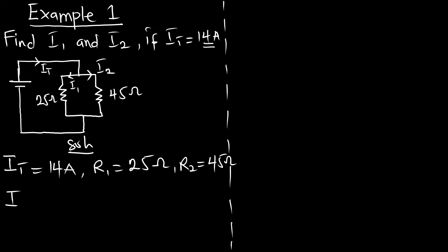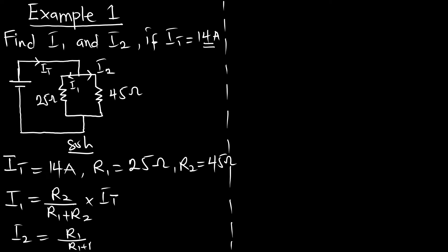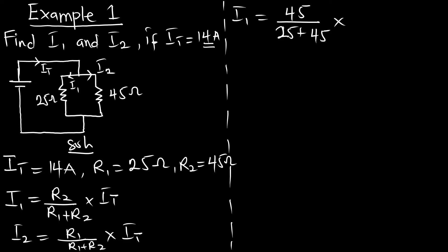The current divider rule for i1 with two resistors is: i1 equals R2 on R1 plus R2, multiplying the total current. For i2 it is: i2 equals R1 on R1 plus R2, multiplying the total current. Substituting values: i1 equals 45 on 25 plus 45, multiplied by 14 amperes, which gives us i1 equals 9 amperes.